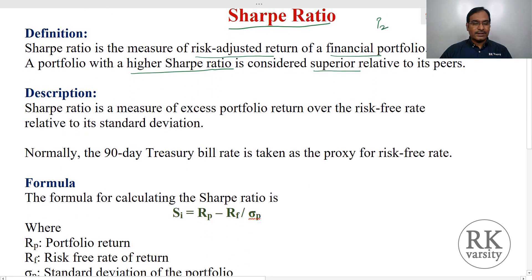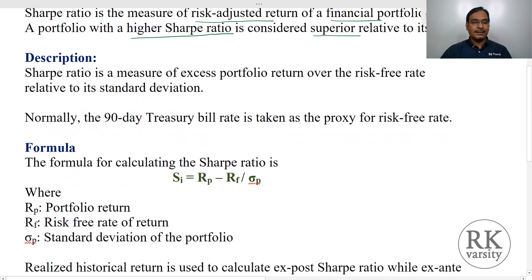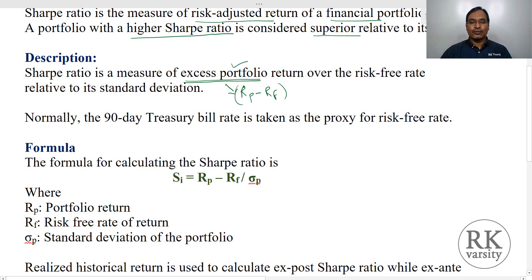The Sharpe Ratio is a measure of excess portfolio return. Excess portfolio return is also called risk premium — that is the return on a portfolio minus the risk-free rate. This is used as the numerator. The denominator is the standard deviation of the portfolio, which we use to measure this relative risk.